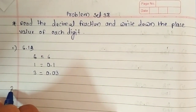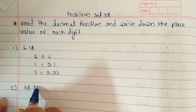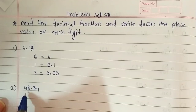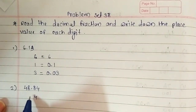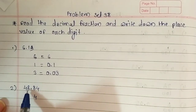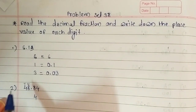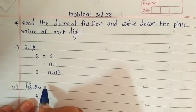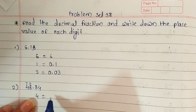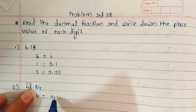Next question is 48.84. Let's take our first digit — it is 4. 4 is before the decimal point, so it is in the place of 10. 8 is in the unit place and 4 is in the tens place. So the value of 4 is 40 and we write 0 for 8.